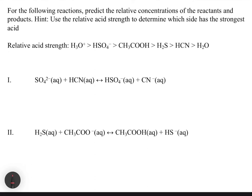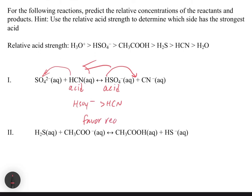Let's do one more example. I like this one because it gives you the relative acid strengths in a slightly different format — listed out as H₃O⁺ > HSO₄⁻ and so on. The reaction is already given to you, so you don't have to predict the products. We identify our acids: in the first reaction, HCN gives the proton to SO₄²⁻, and in the second, the acid is HSO₄⁻. Comparing HSO₄⁻ to HCN, HSO₄⁻ is the stronger acid, so the reaction favors the reactants.